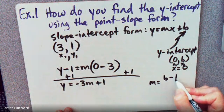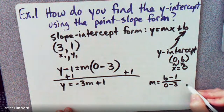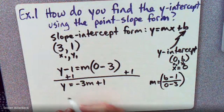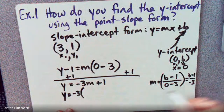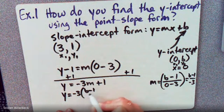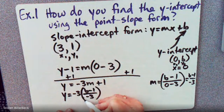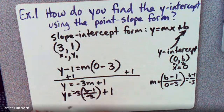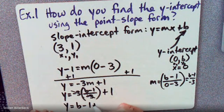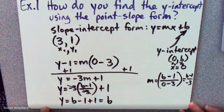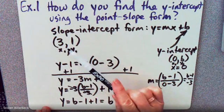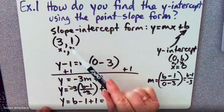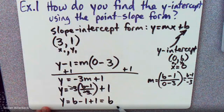We have B minus 1 over 0 minus 3 as our slope. So now let's put that in there. We have negative 3 times B minus 1 over negative 3, so we have B minus 1 over negative 3 plus 1. We see the negative 3s cancel. So we get Y equals B minus 1 plus 1, which is just B. So it doesn't matter what point we put in there. When we find the Y-intercept, X will be 0, and Y will end up being B with this formula when we set it to the slope-intercept form.